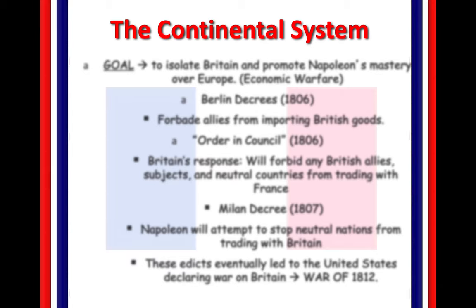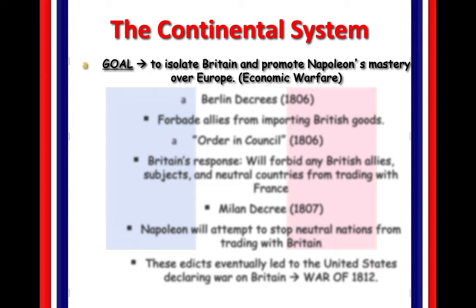Now let's talk about this continental system. Napoleon cannot defeat the British — he can't get there because of Trafalgar. He cannot defeat the navy. So Great Britain is still very much a thorn in his side, and he's going to come up with this idea: if I can't beat them militarily, maybe I can try to beat them economically. His goal with this continental system is to isolate Britain and to further his mastery over Europe. But Napoleon doesn't understand that Great Britain is the economic giant of Europe. The agricultural revolution and the industrial revolution are going down. Great Britain is a powerhouse economically, and Napoleon really makes a mistake in underestimating that. This continental system will eventually fail. We're going to see the Berlin Decrees issued by Napoleon — it forbids his allies from importing British goods, and that's going to be devastating to Prussia and devastating to Russia.